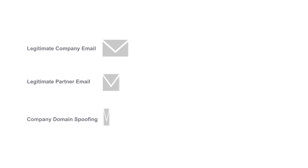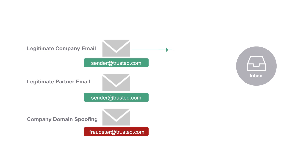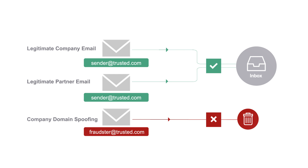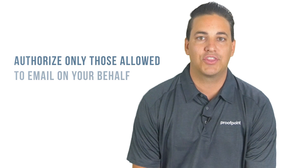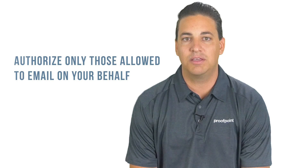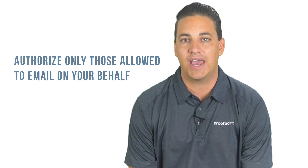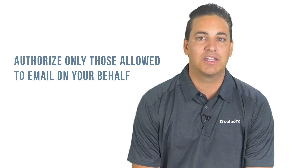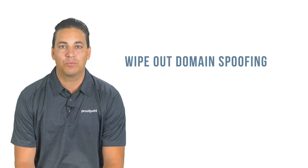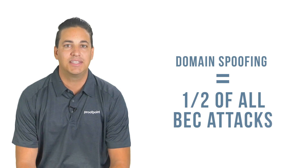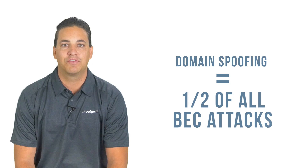Through DMARC authentication, you can ensure that the email coming into and being sent from your organization is from who it says it's from. Email authentication enables you to authorize everyone who should be sending email on your behalf and block any email that fails authentication. With authentication, you can wipe out domain spoofing, which makes up over half of all BEC and consumer phishing attacks.